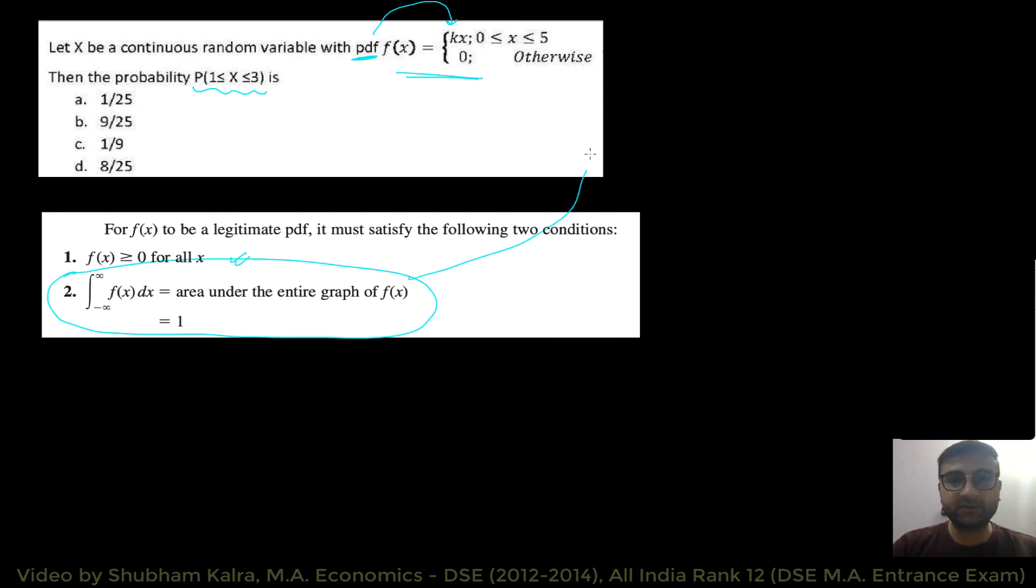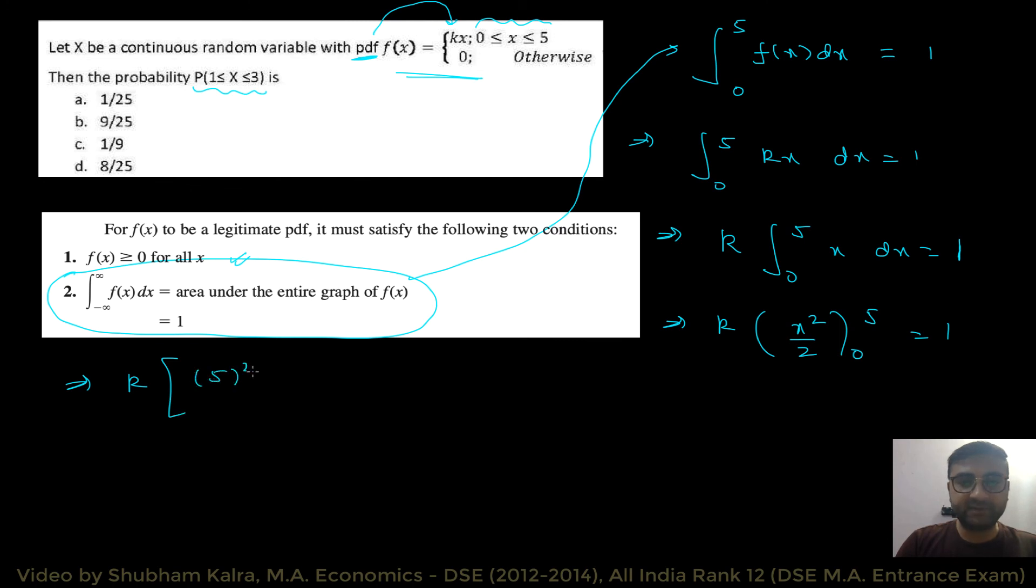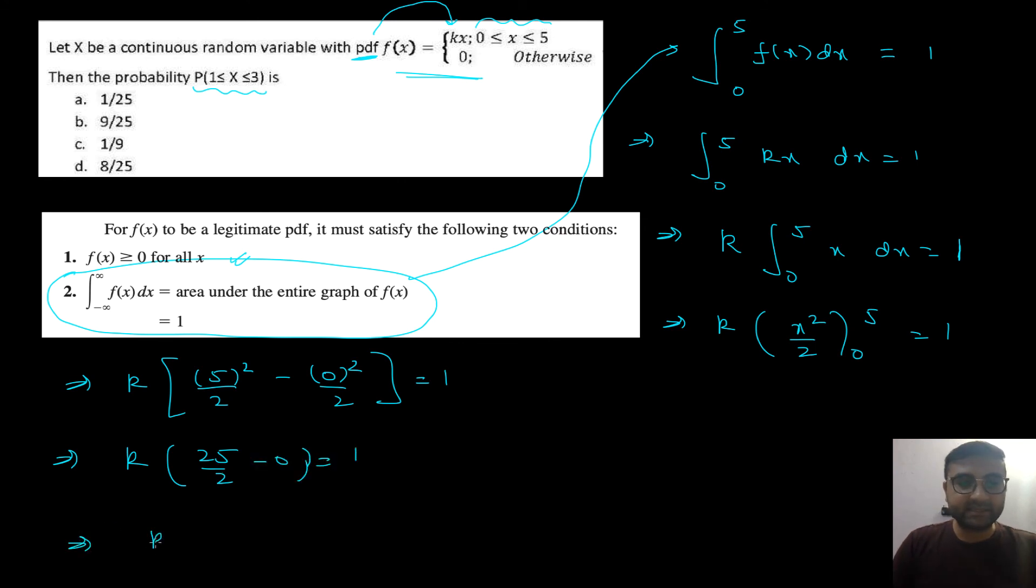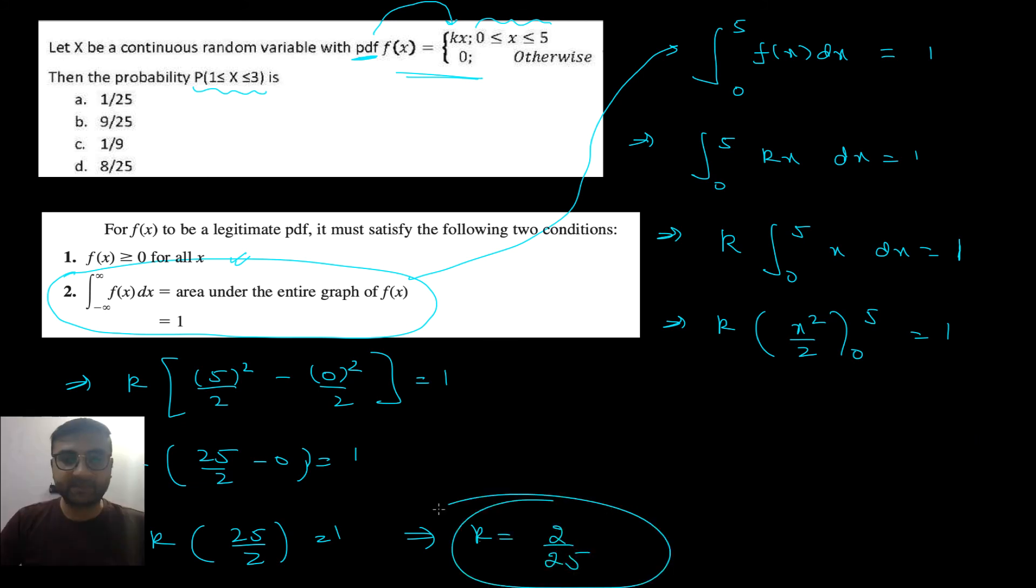Okay. So, I'm going to use this property. So, is property ko use karke, main yaha pe fx ko agar integrate karu from zero to five, because these are the only possible values of x. So, this should give me one. So, this implies, agar hum integrate karay, K multiplied with x ko, then this is equal to one. This implies, K is going to be a particular constant. So, usko hum integration se bahar le sakte hain. So, this is what we have. And x ka integration ho jaega, x square by 2, 0, 5, equal to 1. This implies, K, 5 square divided by 2, minus 0 square divided by 2, is equal to 1. And this implies, K, 25 by 2, minus 0, is equal to 1. So, this implies, K multiplied by 25 divided by 2, is equal to 1. And this implies, that K is equal to 2 by 25. Okay. So, yeh ho gai, K ki value. That means, jho humara PDF hai, woh hai, 2 by 25 x. Agar x ki value hai, zero se leke 5 ke beech mein, and 0 otherwise.